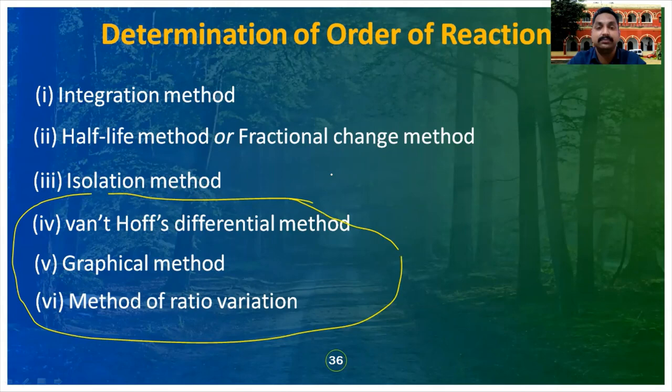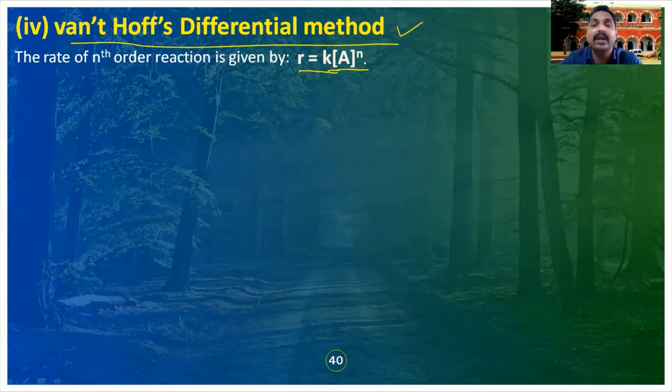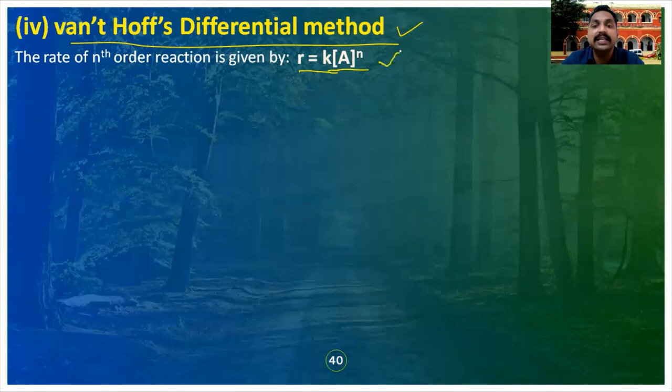Now, the Van't Hoff differential method. In this method, we take the rate of reaction. The formula for rate of reaction is: R = k[A]^n, where n is the order of the reaction, k is the rate constant, and [A] is the concentration of reactant A left after reaction time T. Take this expression and apply natural log on both sides. We get: ln R = ln k + n·ln[A].